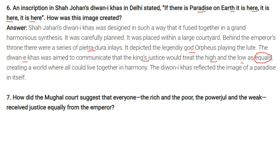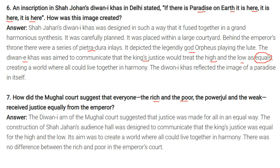Question: How did the Mughal court suggest that everyone — the rich and the poor, the powerful and the weak — received justice equally from the emperor? The Diwan-i-Aam of the Mughal court suggested that justice was delivered equally to all. The construction of Shah Jahan's hall was designed to communicate that the king's justice was equal for the high and the low, aiming to create a world where all could live together in harmony, with no difference between the rich and the poor in the emperor's court.